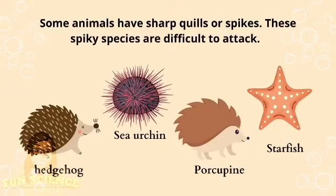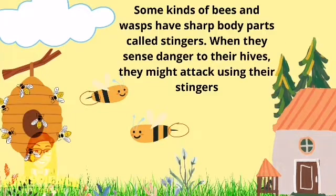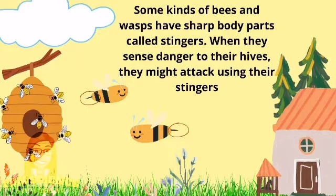Some animals have sharp quills or spikes. These spiky species are difficult to attack. Some kinds of bees and wasps have sharp body parts called stingers. When they sense danger to their hives, they might attack using their stingers. Bees pierce their stinger on the animal or human skin, then release a poisonous substance that causes pain to the victim.